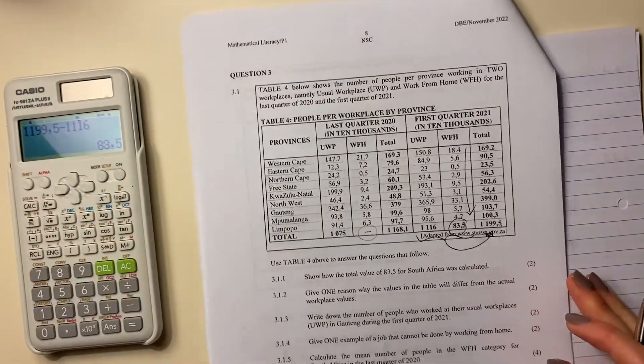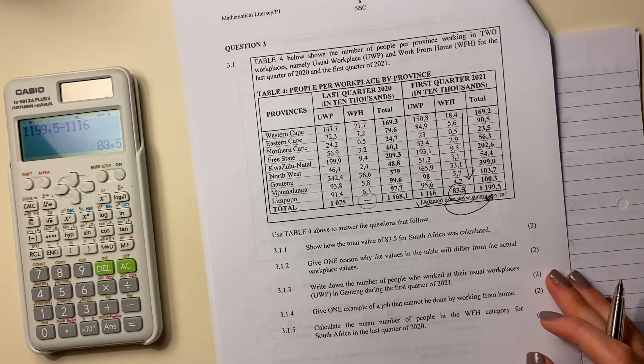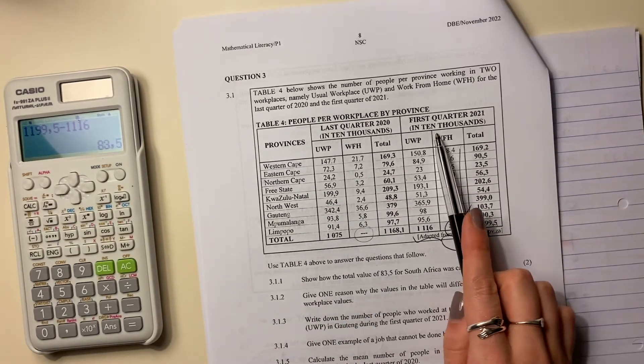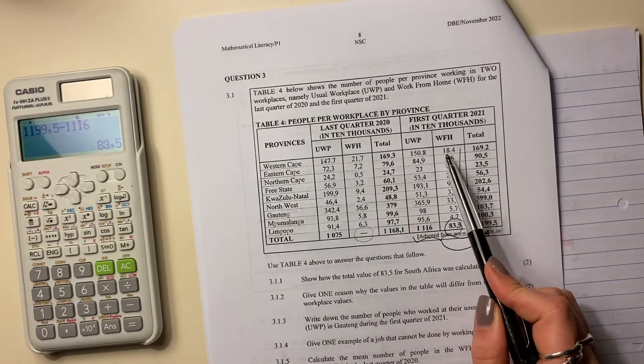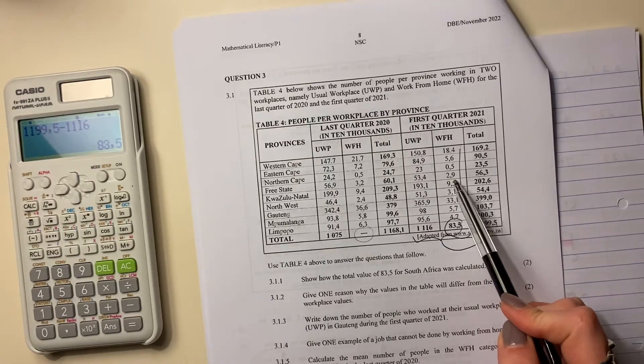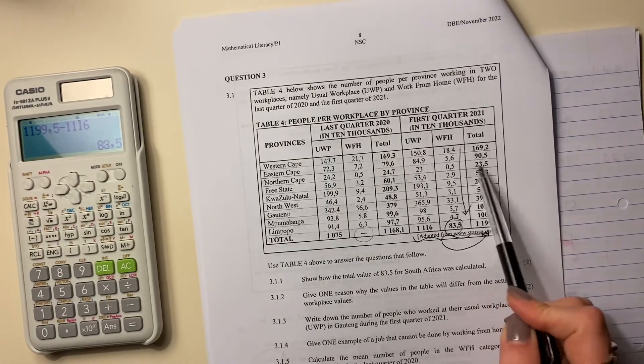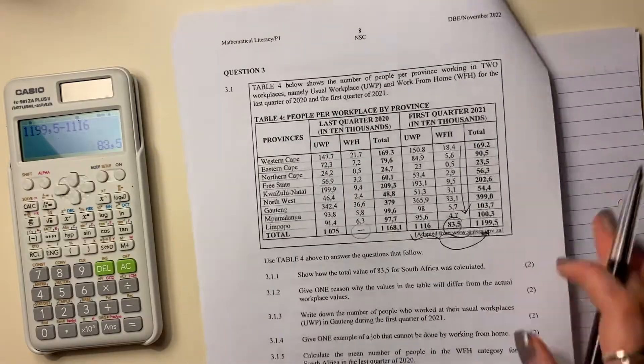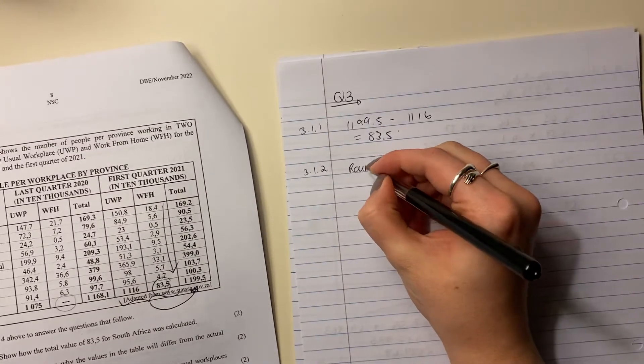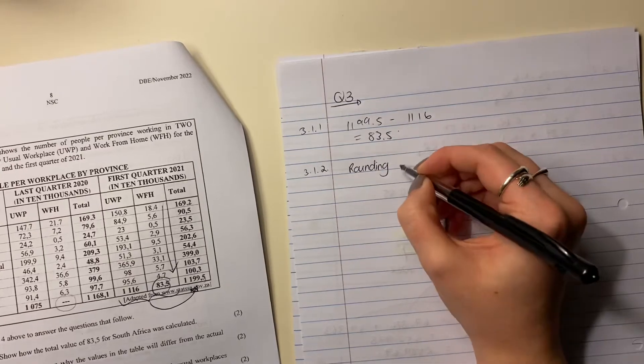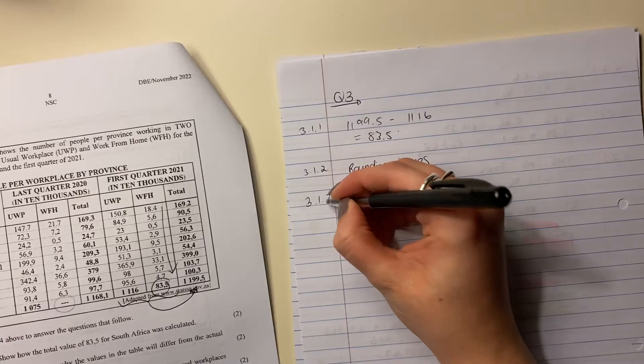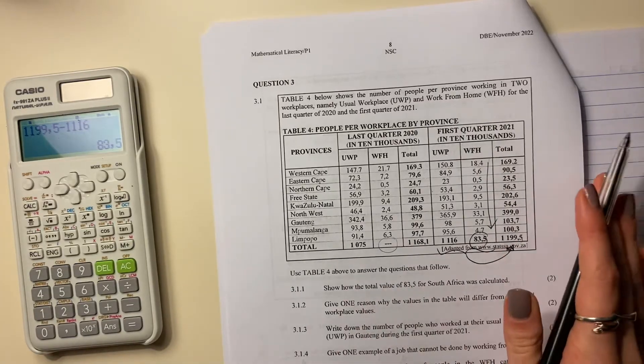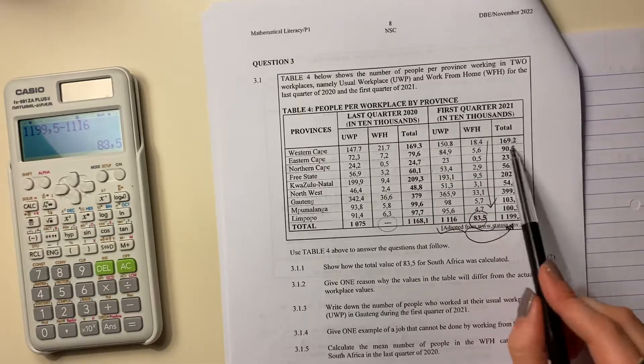Let's move on. Give one reason why the value on the table will differ from the actual workplace values. So let's just see what it says. Well, there's two reasons. Firstly, it's in 10,000. And so here, for example, this 2.9 is actually 2.9 times by 10,000. Now, what happens to all the other decimals? They've just fallen away because they've just rounded off here to one decimal. So what I would say here is rounding error. There could be rounding issues. And whenever they talk about values differing and that sort of thing, rounding issues is like a pretty safe bet as an answer.